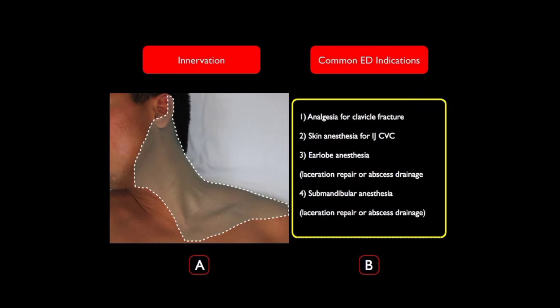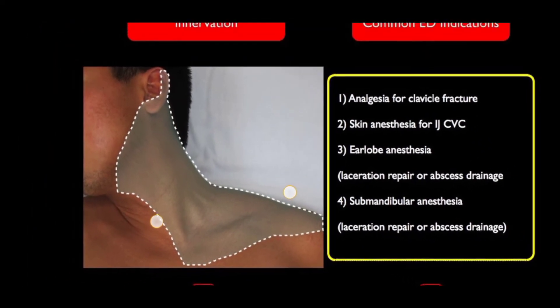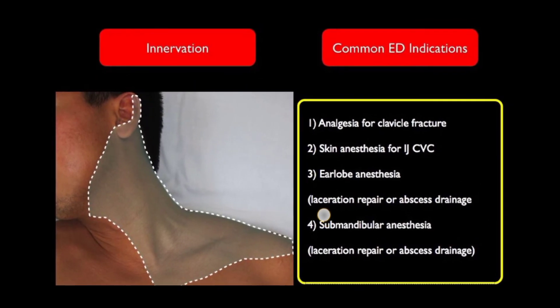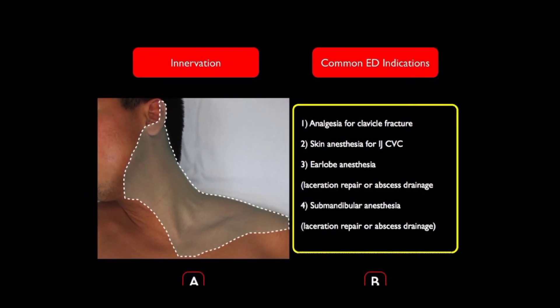This image shows the nerve supply of the superficial cervical plexus — that is, the skin involving the lateral area of the neck and supra-clavicular area. The most common indications for superficial cervical plexus block are: analgesia for clavicular fracture, skin anesthesia for insertion of internal jugular central venous catheter, ear lobe anesthesia, laceration repair or abscess drainage, and submandibular anesthesia for laceration repair or abscess drainage.